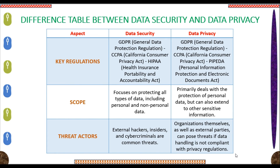The next aspect is Scope. Data privacy primarily deals with the protection of personal data, but can also extend to other sensitive information. The last aspect is Threat Actors. Threat actors for data security are external hackers, insiders, and cybercriminals. Similarly, for data privacy, organizations themselves as well as external parties can pose threats if data handling is not compliant with privacy regulations.